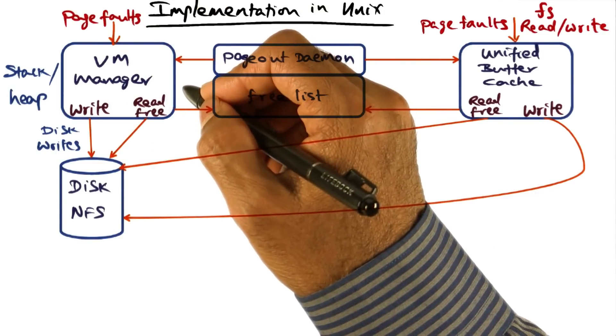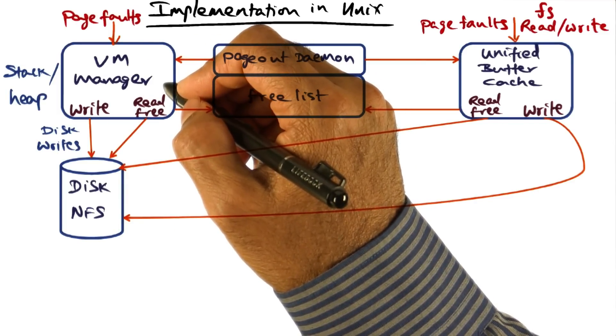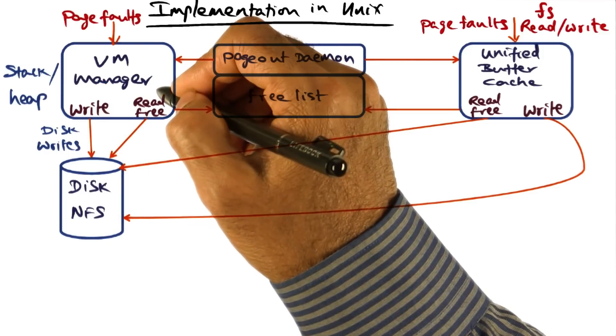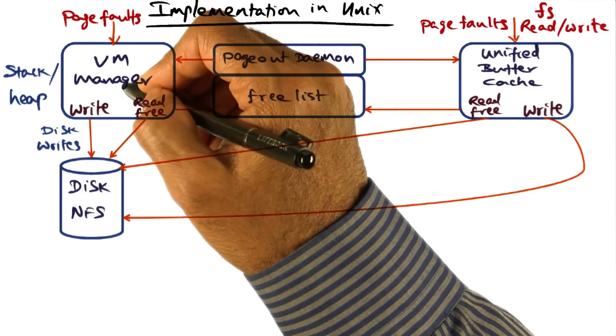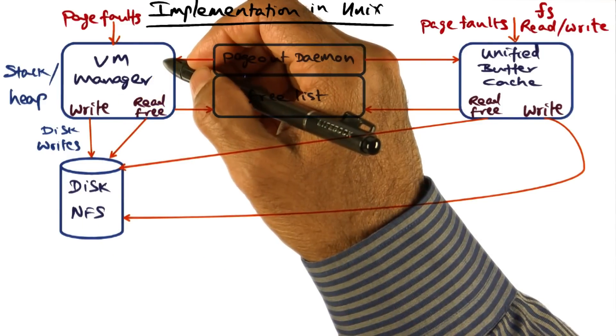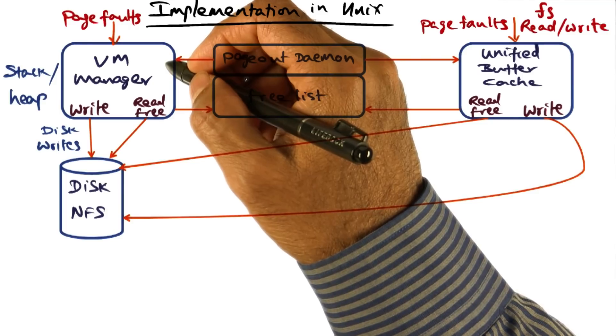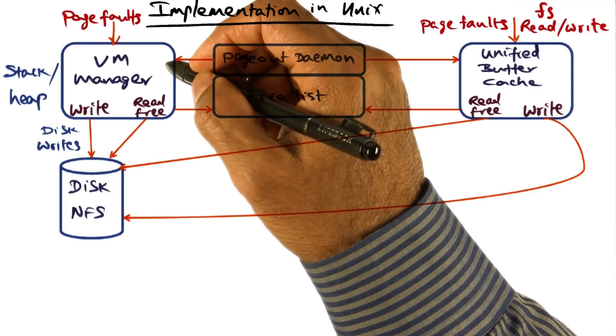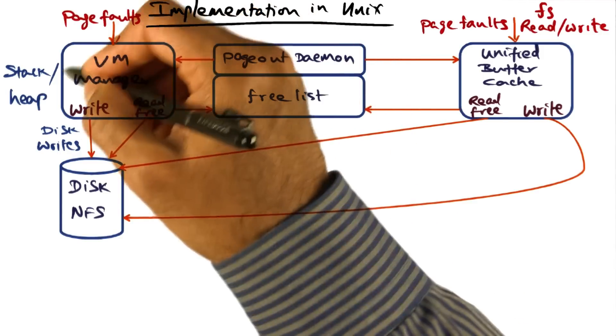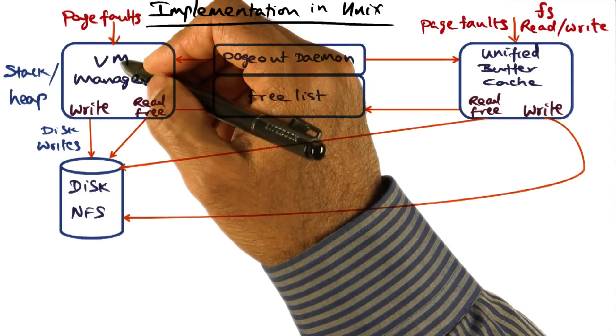The first one is the virtual memory system. This is responsible for mapping process virtual address space to physical memory and worrying about page faults that happen when a process is trying to access its stack and heap and so on, so that it can bring those missing pages perhaps from the disk. These pages are sometimes referred to as anonymous pages because a page is housed in a physical page frame. And when a page is replaced, that same physical page frame may host some other virtual page. So the virtual memory system is devoted to managing the page faults that occur for process virtual address space, in particular the stack and the heap.